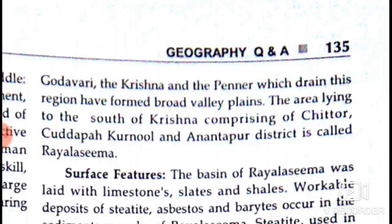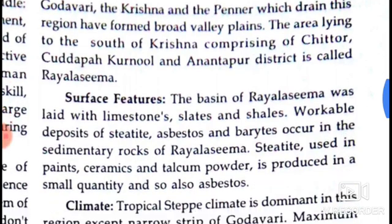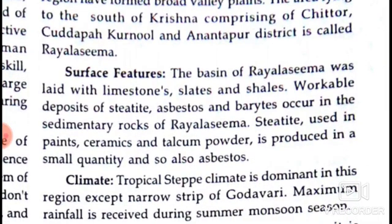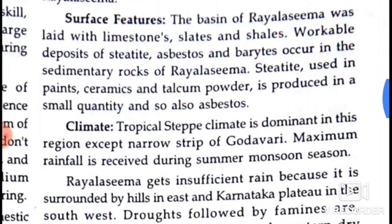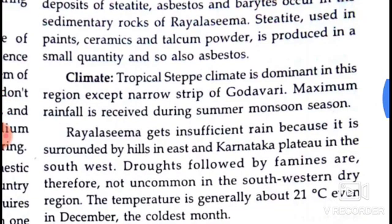The area lying to the south of Krishna, comprising Chittoor, Kadapa, Kurnool and Anantapur districts, is called Rayalaseema. The surface of the basin of Rayalaseema was filled with limestone, slates and shales. Workable deposits of steatite, asbestos and barytes occur in the sedimentary rocks of Rayalaseema. Steatite is used in paints, ceramics and talcum powder. Asbestos is also produced in small quantities.